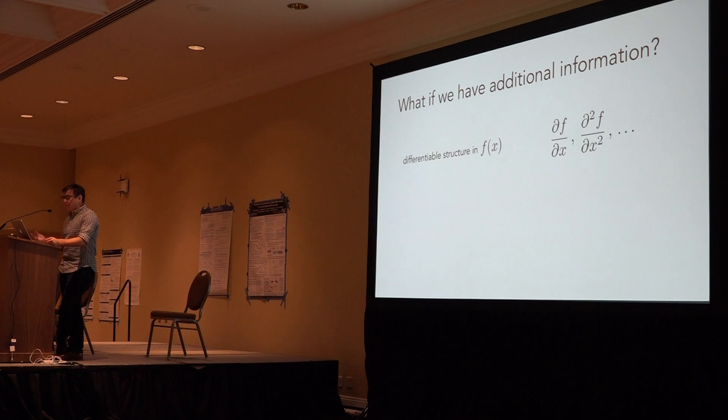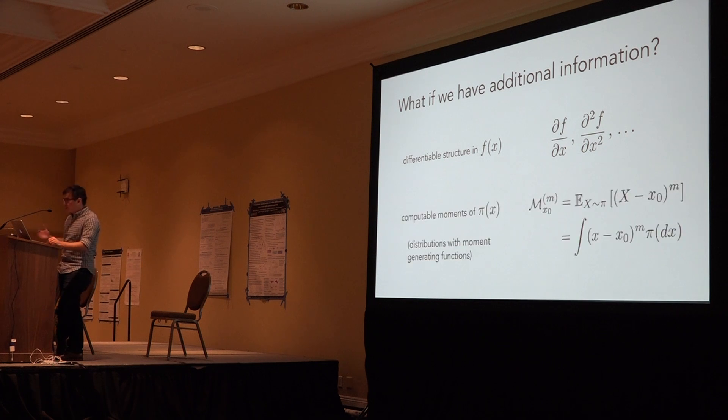The standard Monte Carlo estimator is widely applicable. Can we improve upon it if we have additional information? Say we're able to compute a few derivatives of f, which might be a reasonable assumption if f is known and we implement it with an auto-differentiation toolkit. And additionally, let's say we can compute some moments of pi. Let's say pi is a pretty well understood distribution. Here I'm defining the mth moment about x0, which is the expectation of x minus x0 raised to the mth power. For instance, for distributions with a known moment-generating function, auto-differentiation tools can help you compute higher order moments.